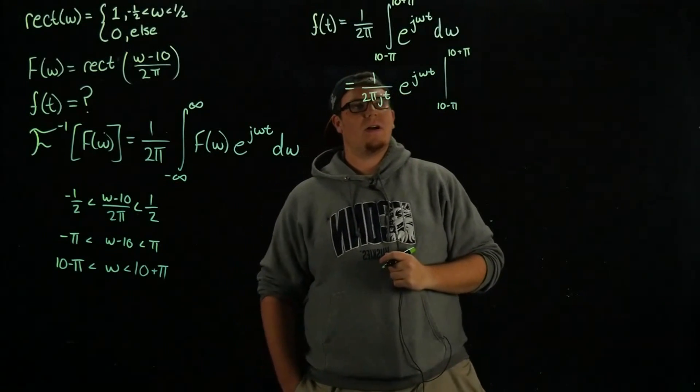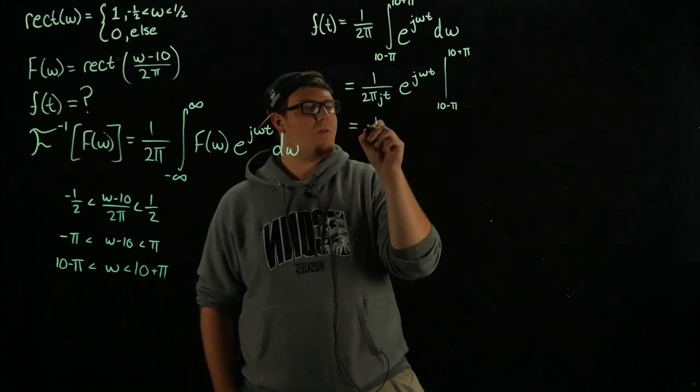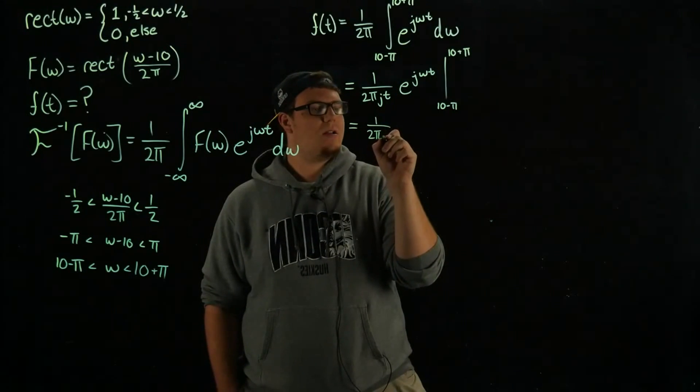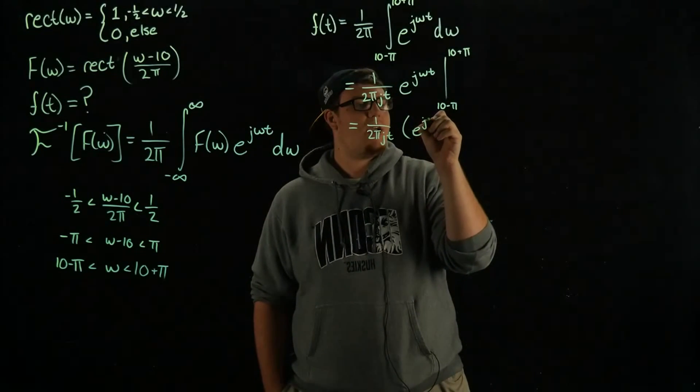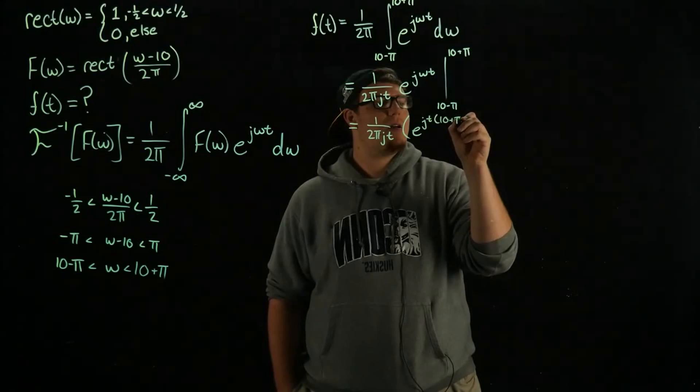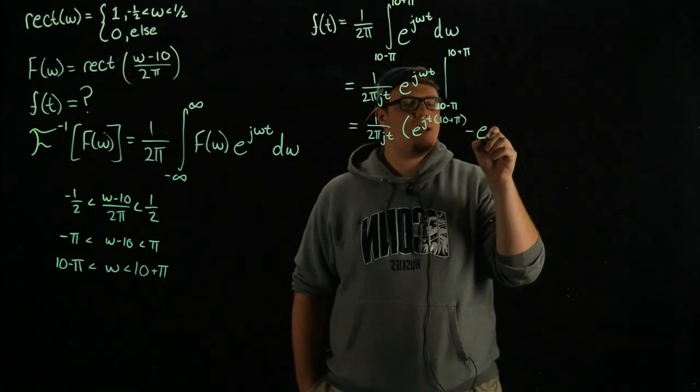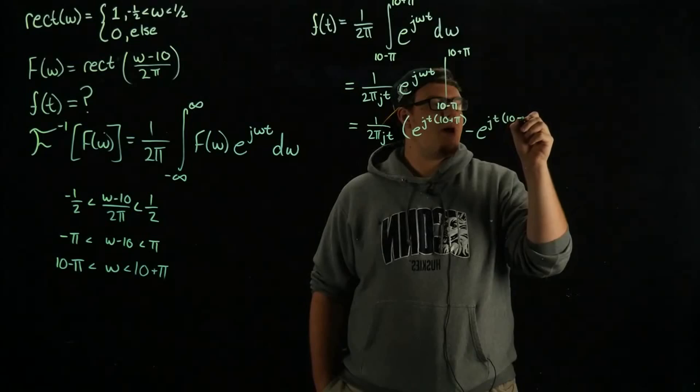If we plug in here we end up with 1 over 2 pi j t times e to the j t times 10 plus pi minus e to the j t times 10 minus pi.